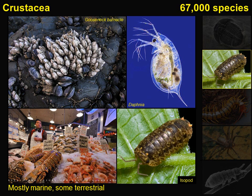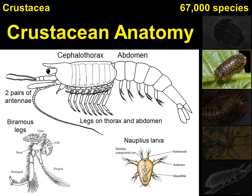Crustaceans are a large group of mostly water-dwelling arthropods with a total documented diversity of over 67,000 species. They are important components of zooplankton, a critical resource in marine food webs. They include the tiny Daphnia, a model organism in studies of the environment and epigenetics, the sessile and apparently very un-arthropod-like barnacles, and are probably most familiar to us as seafood such as crab, shrimp, and lobsters. Crustaceans generally have their bodies organized into two major tagma.